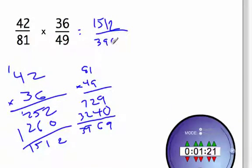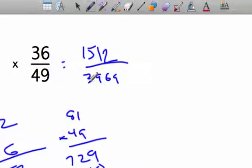Is it in simplest form? That's a good question. Let's see. Let's add up the digits here. 3 plus 9 is 12, plus 6 is 18, plus 9 is 27. 3, 8, 9. Well, these can both be divisible by 9.